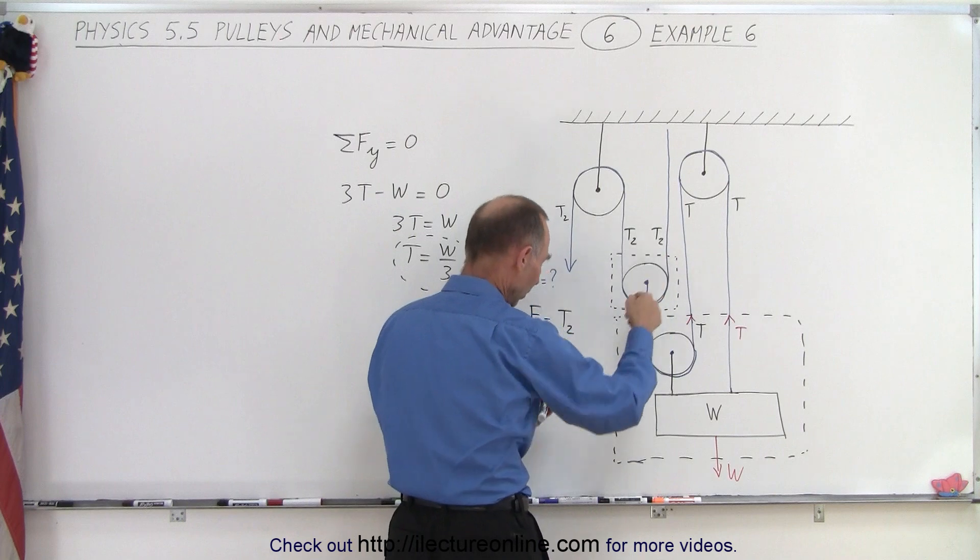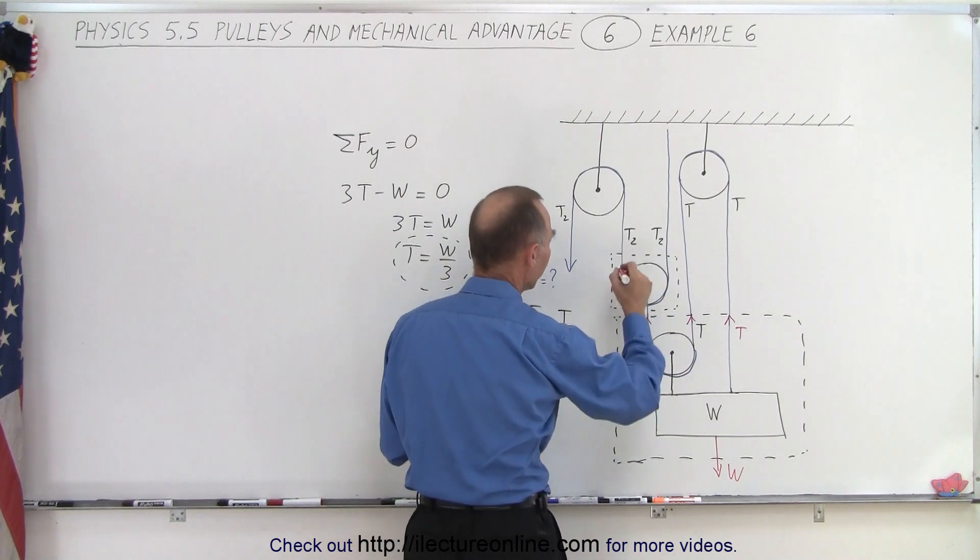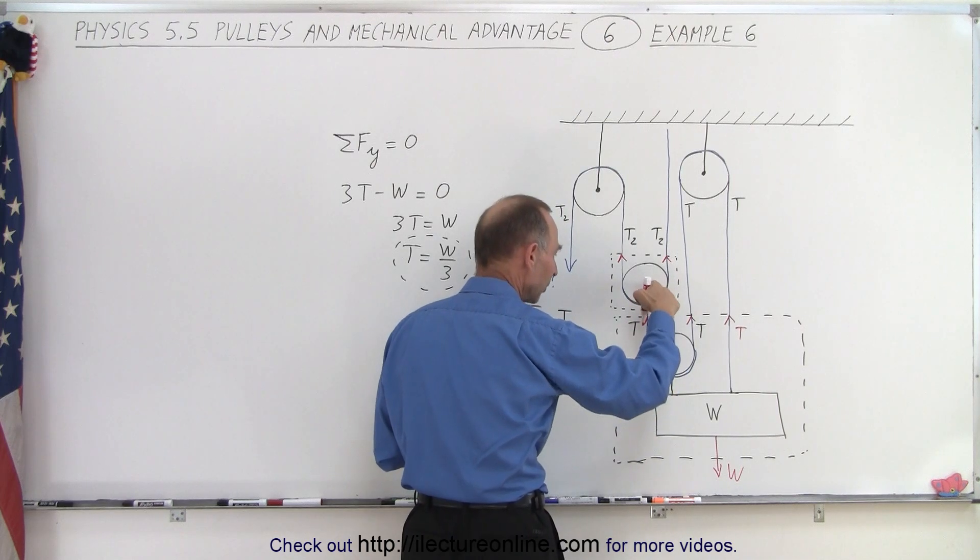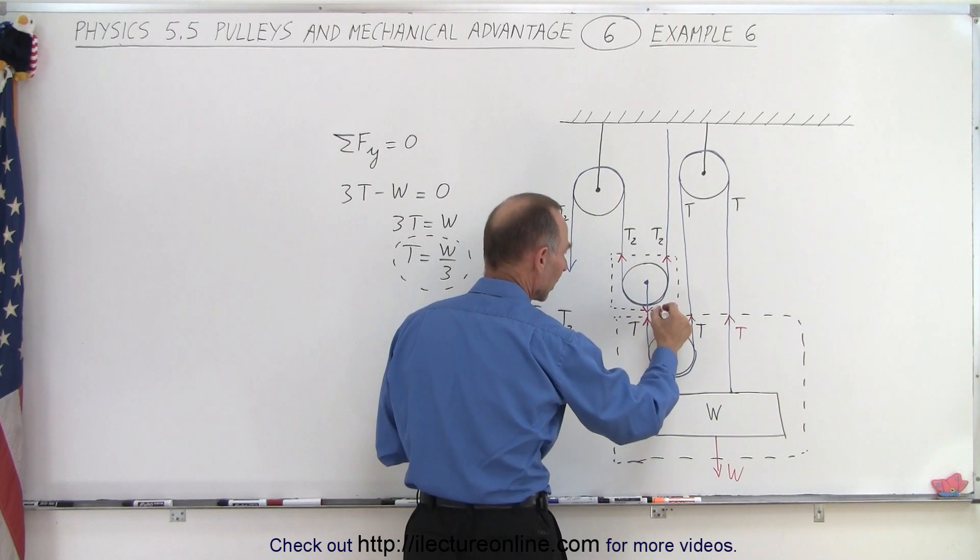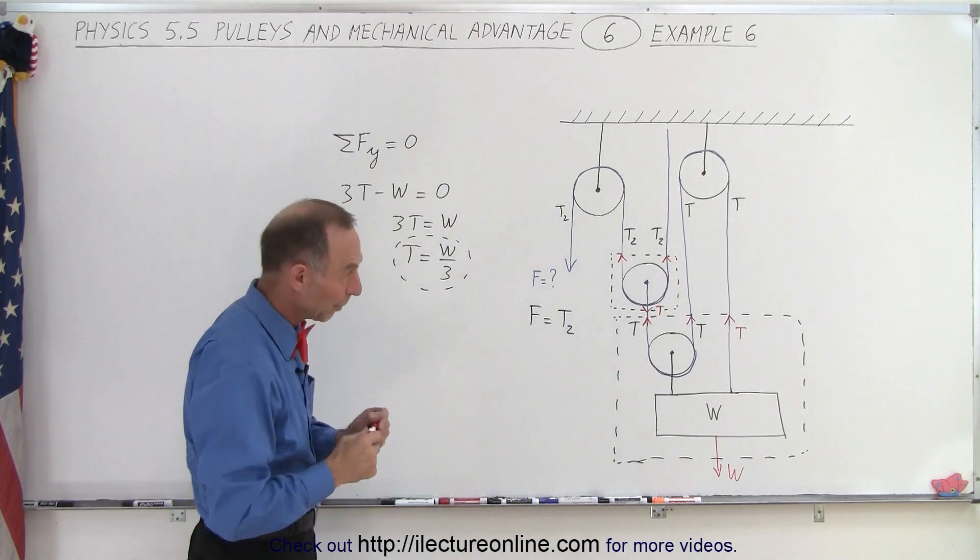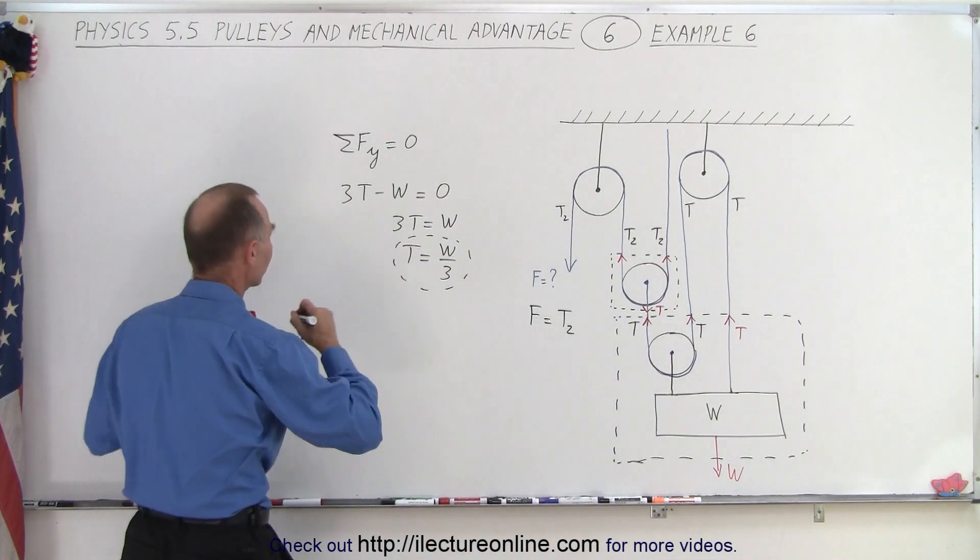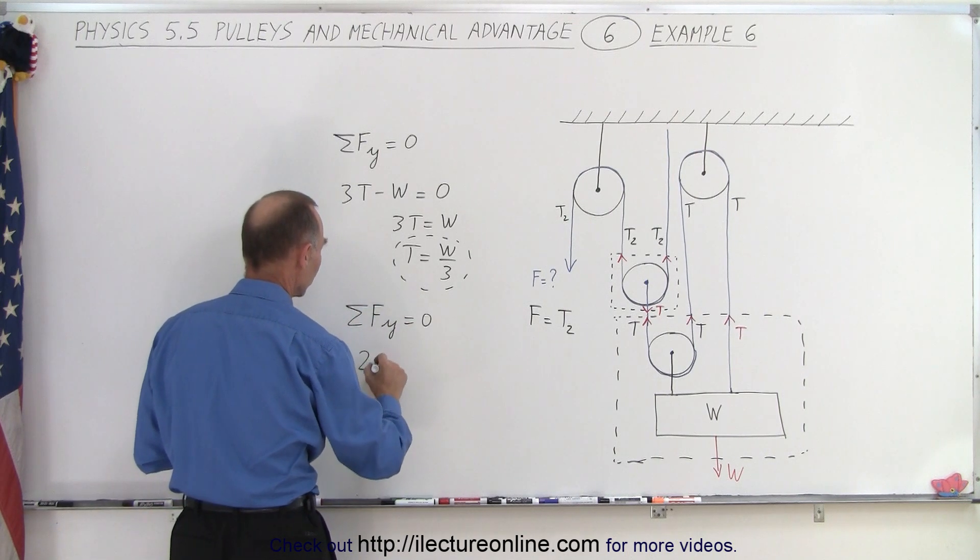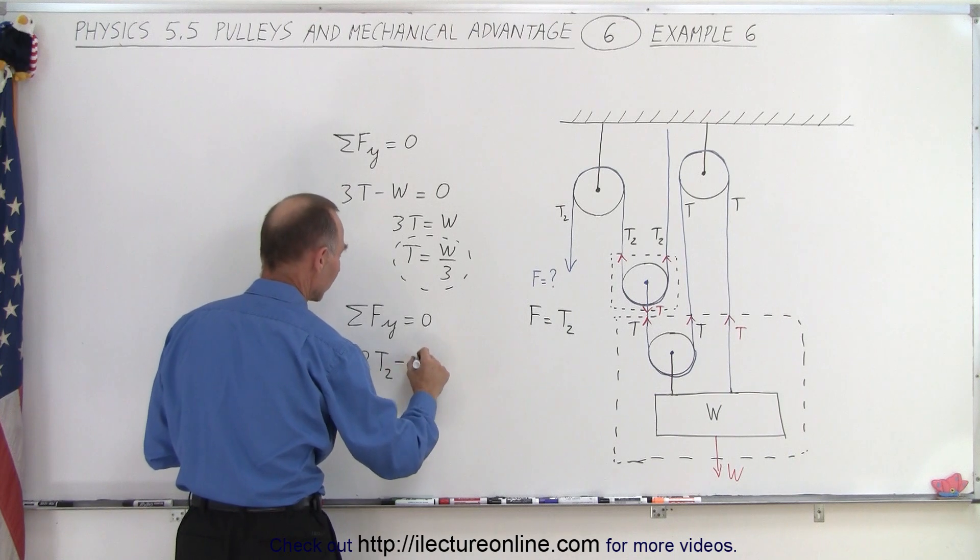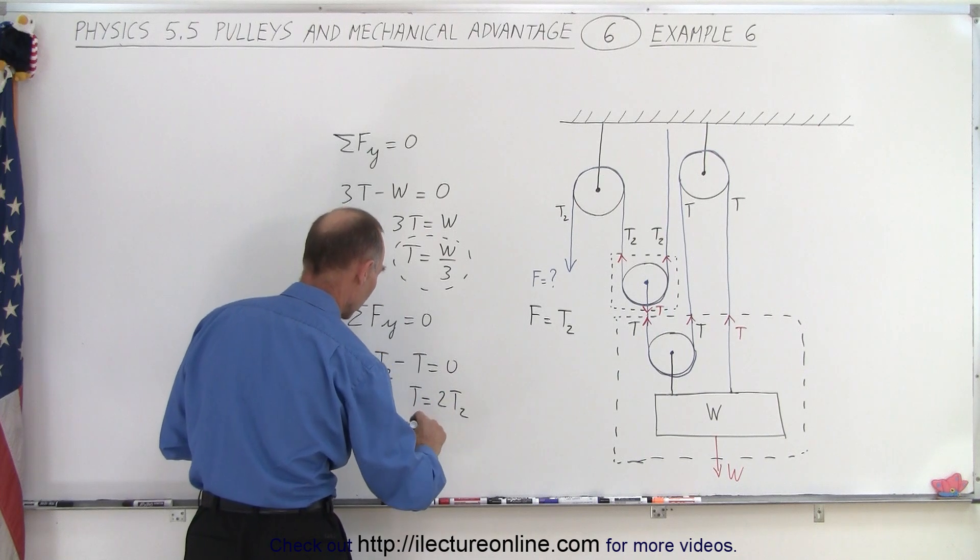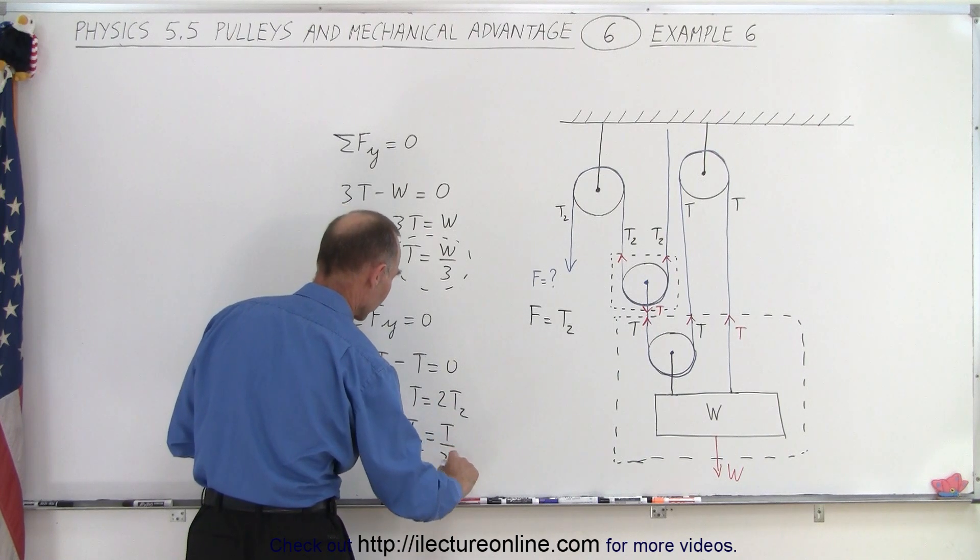Now, relative to this pulley, we have two forces pulling up, they're both T2, and we have one force pulling down relative to this pulley, which is equal to T. So T pulling down, and two T2s pulling up. And they must be balanced, so we can say that the sum of the forces in the y direction add up to zero. So we have two T2 minus T equals zero, which means that T is equal to two T2, or T2 is equal to T divided by two.